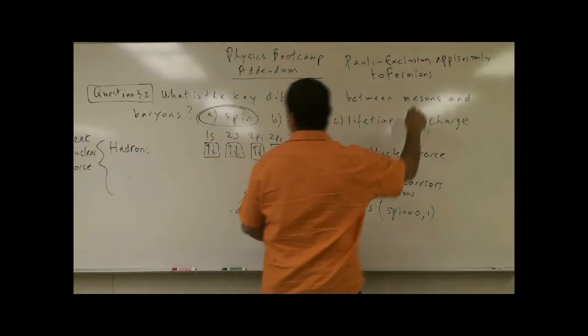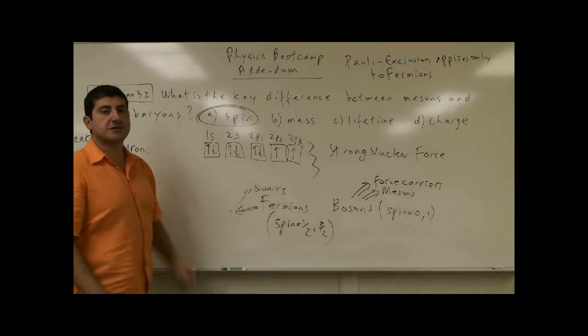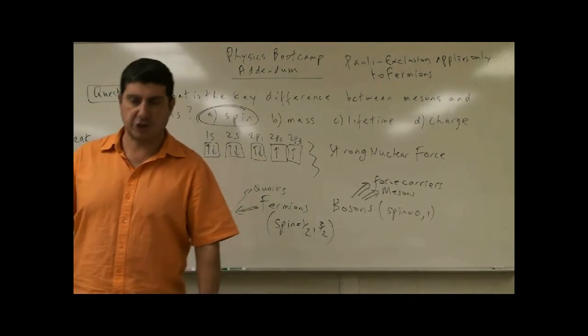So electron is a fermion and any other form of matter that has a spin half is also a fermion. So therefore, mesons and baryons differ in their spin. Thank you very much.